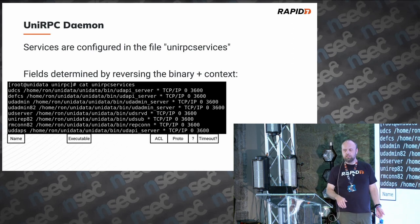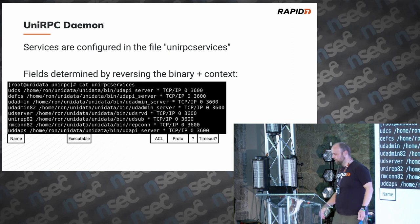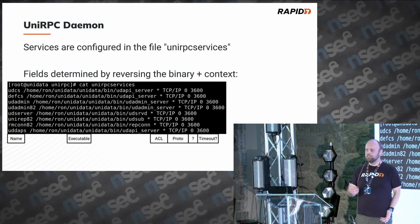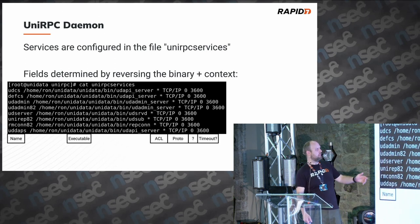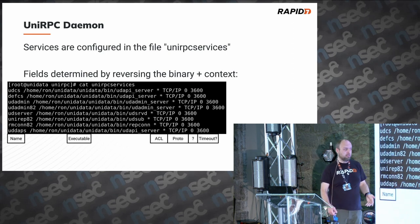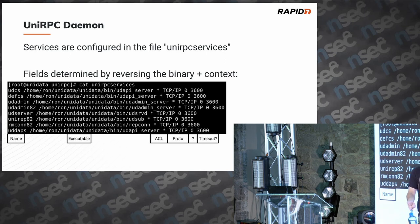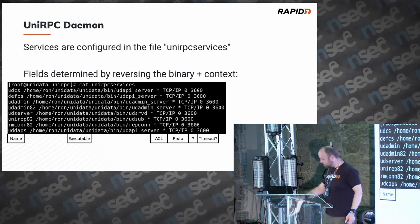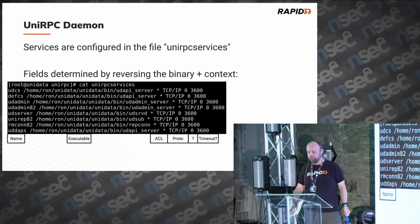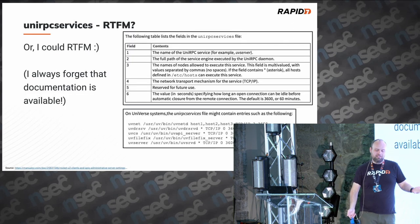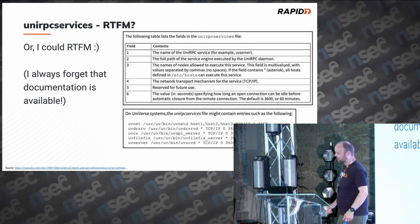So what services can I actually execute? When you install the software, it comes with a file called UniRPC services. I saw the file being read by the process. My first instinct was to reverse engineer the process to figure out what this file means — but if you look at the file, a lot of fields you can guess from context. The first column looks like a name, the second column is binaries in a slash bin directory, the star might be an ACL, and 3600 is an hour in seconds so it's probably a timeout. I spent about a day learning what the fields mean, and then when preparing this talk, I Googled the file and it's actually documented. So I should have just read the manual — but my guesses were correct.